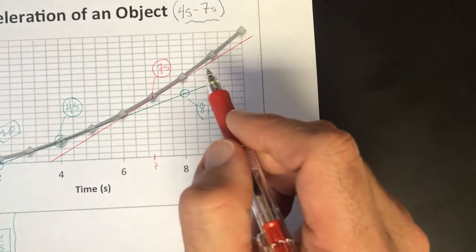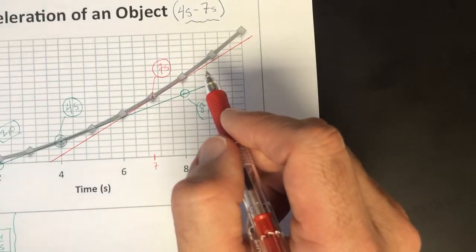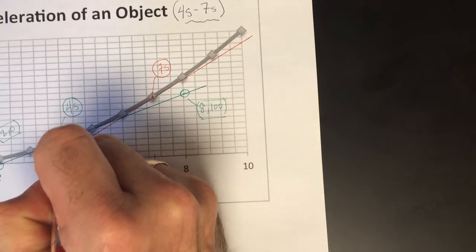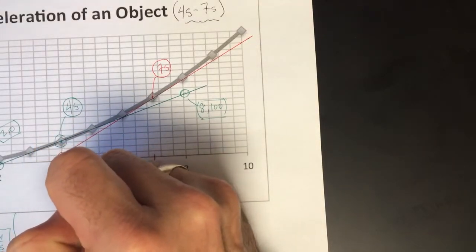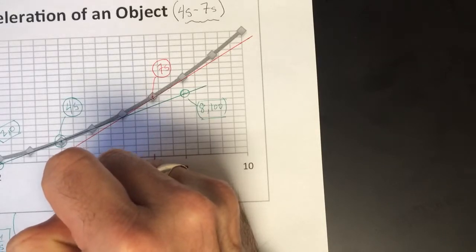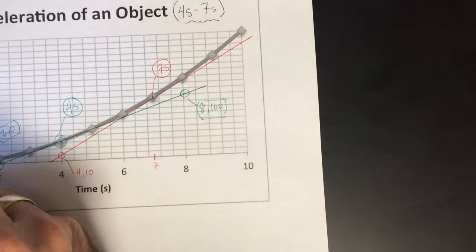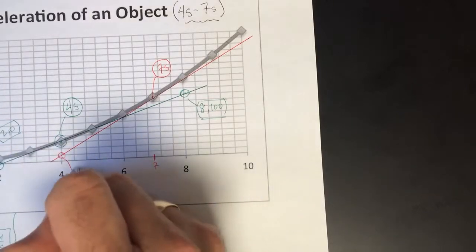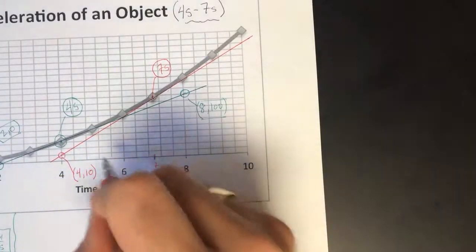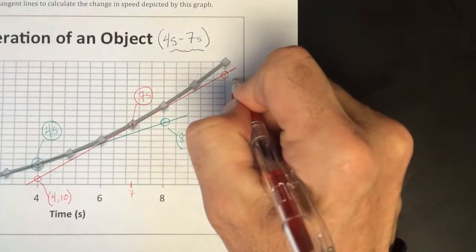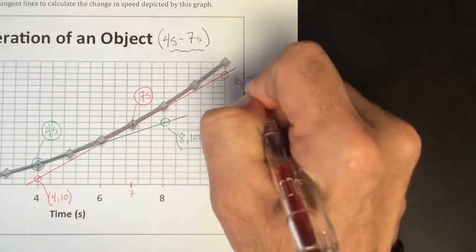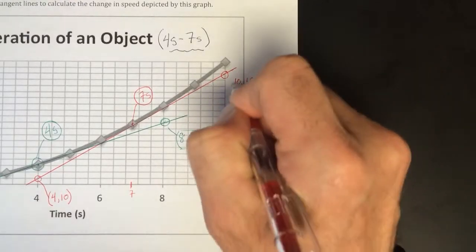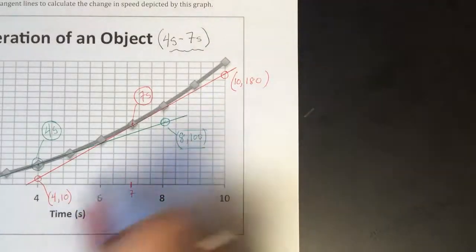So like we did before, let's identify points along this line. Here's one that we can pick here. That's an easy one. So that'll be four, ten. This would be ten. And let's pick this one here. This is easy. And that is going to be ten, one hundred eighty. Good. So those are my data pairs.